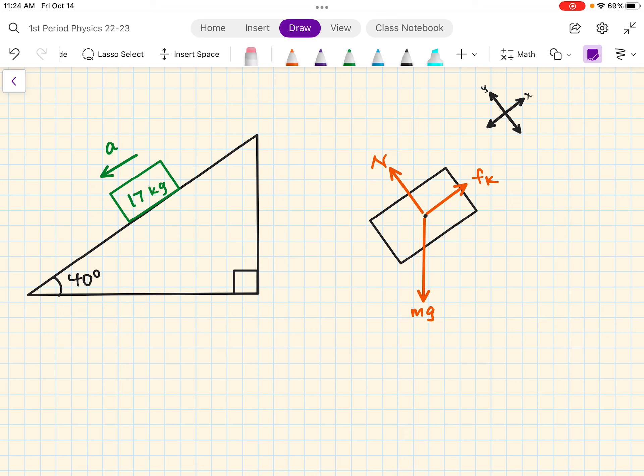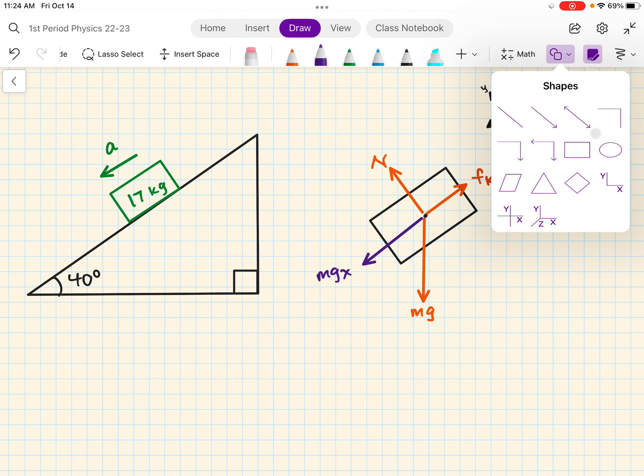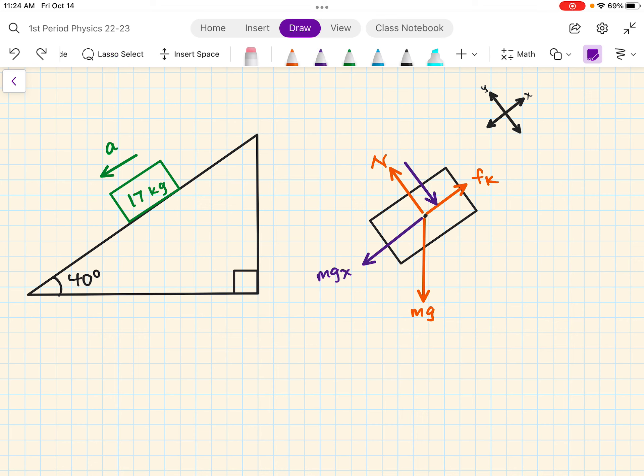In this case, the component along the x-axis, the component of the weight along the x-axis, is now bigger or has a greater magnitude if you compare it to the force of friction. That's why we have an acceleration, right? It's an unbalanced force. So this will be mgx because this is the x-axis when we change the coordinate system. And the component of the weight acting along the y is the same. It does not change. Still equal and opposite to the normal force.